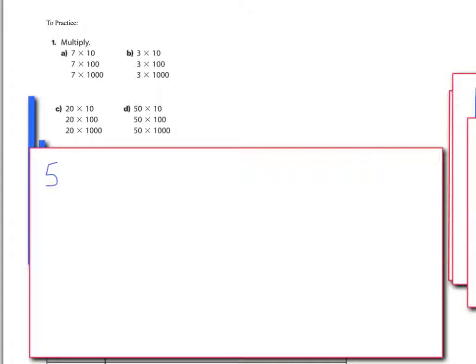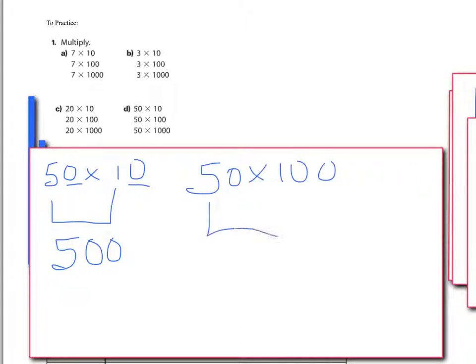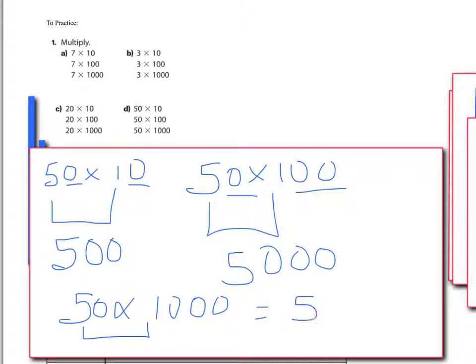Last one. 50 times 10. Well, again, 5 times 1 is 5. How many zeros did I take off? 2. I add 2 back on. 500. 50 times 100. 5 times 1 is 5. I took 3 zeros off. I put 3 zeros back on. 5,000. 50 groups of 100. Last one. 50 times 1,000. 5 times 1, again, is 5. How many zeros did I take off? 4. So I have to put 4 back on. 50 groups of 1,000 is 50,000.